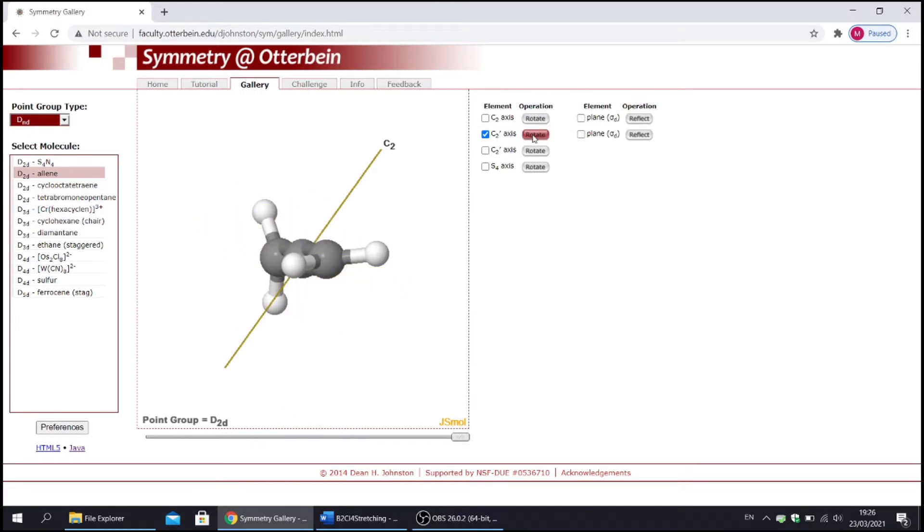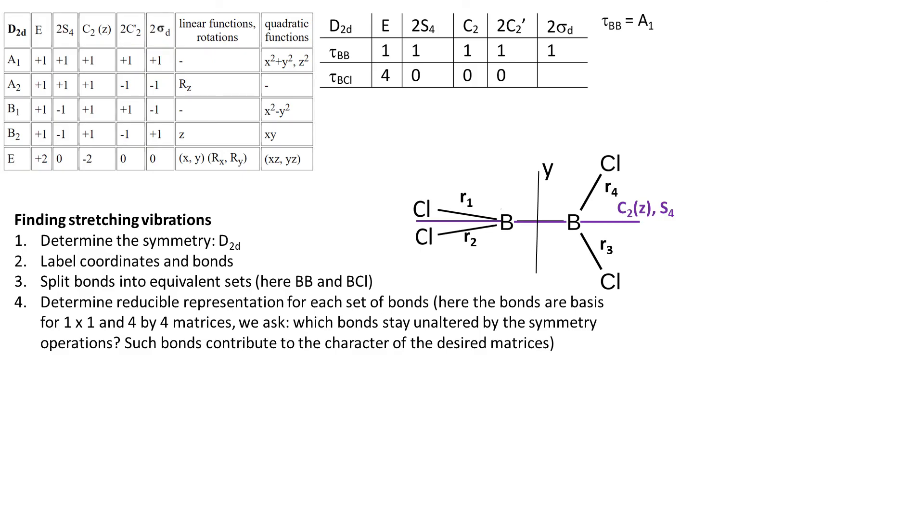We expect that because C2's prime are, after all, perpendicular to the BB bond, so they have to flip the ends of the molecule. The last symmetry operations are planes of reflection, and of course, regardless of what plane of reflection we pick, there will always be 2 BCl bonds that do not move.